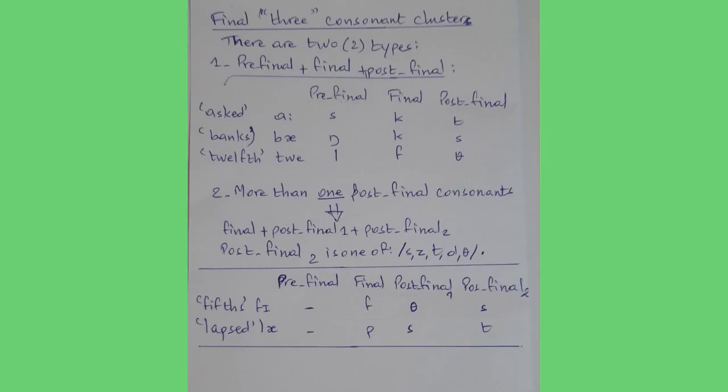Now let's move to final three consonant clusters. There are two types. Number one: pre-final plus final plus post-final. Examples: 'asked' — pre-final /s/, final /k/, post-final /t/. 'Banks' — pre-final /ŋ/, final /k/, post-final /s/. 'Twelfth' — pre-final /l/, final /f/, post-final /θ/.